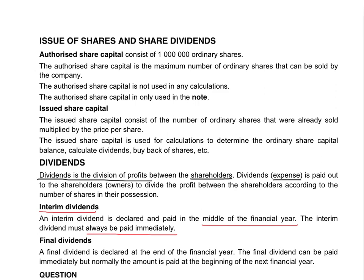The final dividend is declared at the end of the financial year. It can be paid immediately, but normally this amount is paid at the beginning of the next financial year, because there is not enough time to process the payments and pay all the shareholders before the books are closed for the current financial year.